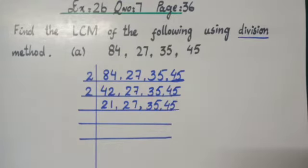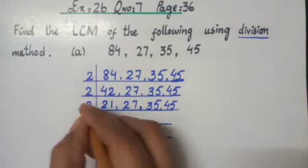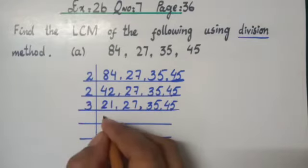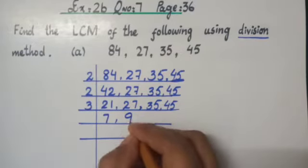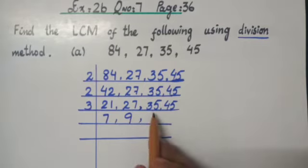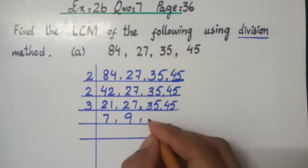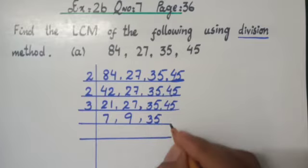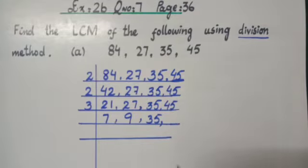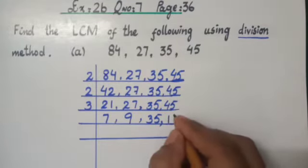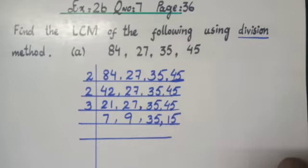Now, none of these numbers can be divided by 2 because these numbers are not even. Now, we have to try with 3. Let us try to solve with 3. We know 3 7s are 21. 3 9s are 27. 7 cannot be divided by 3, so we copy it as it is. Now, 45 can be easily divided. 3 15s are 45, giving us 15. Once again, we have 9 and 15.